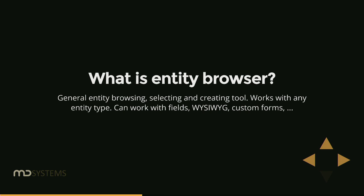So, what is Entity Browser? It's basically a very general browsing, selecting, and creating tool. It allows you to browse entities, select them, and also create them. We think about creating an entity as just another special case of browsing, because this way it's easier to abstract and work with these concepts. It can work with fields, but it's not limited to fields — you can use it for WYSIWYG embedding or in your custom forms. If you have a custom form where you want to get a list of entities, you can use the form element, and the only thing you need to do is read the values from your form state.